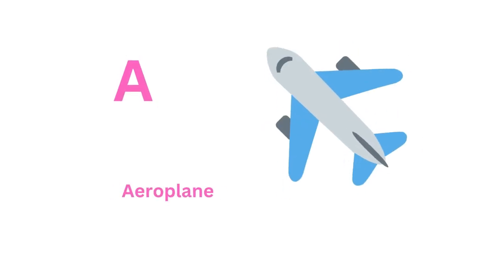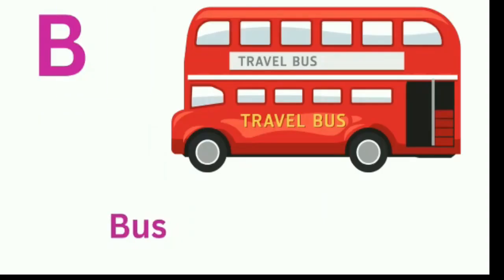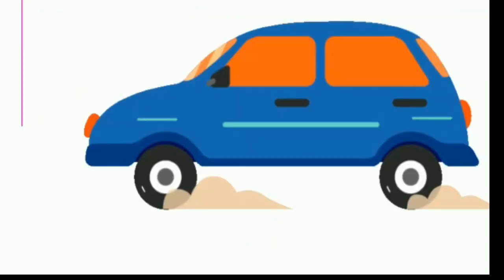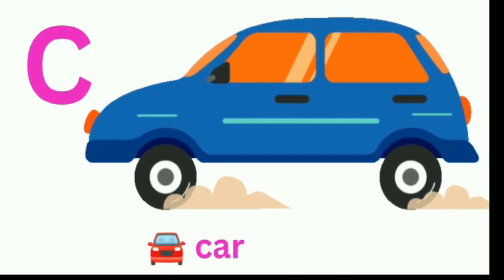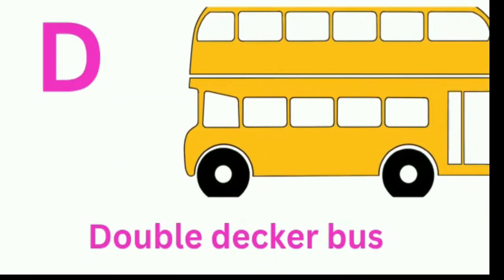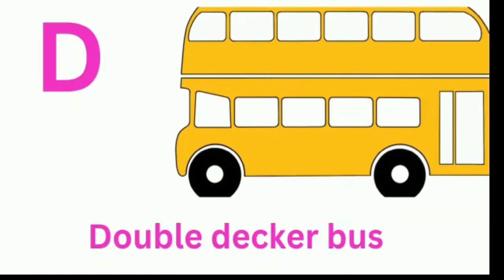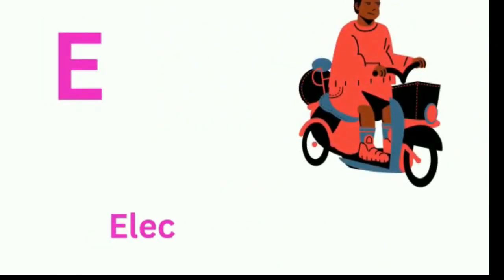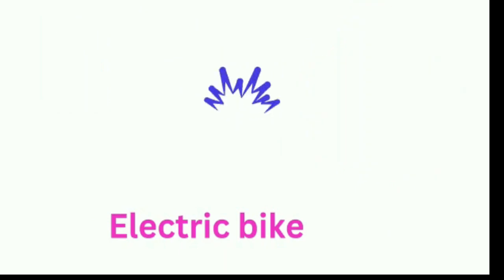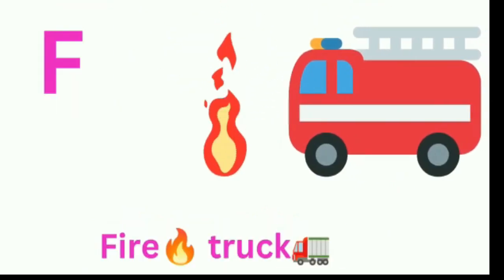A for airplane. B for bus. C for car. D for double-decker bus. E for electric bike. F for fire truck.